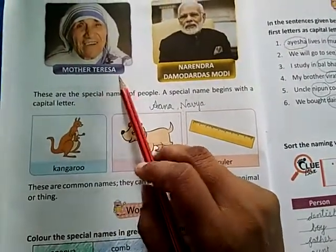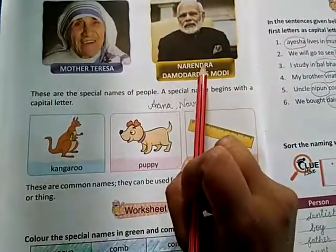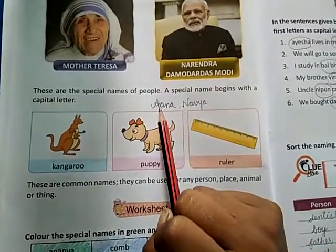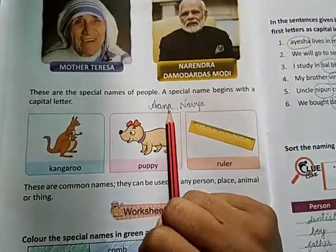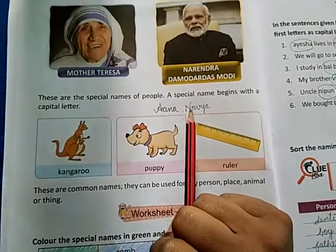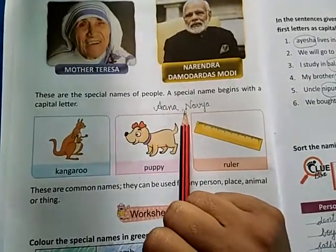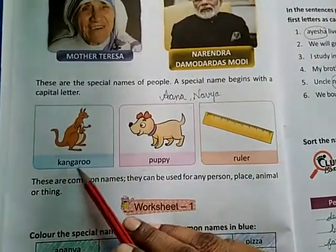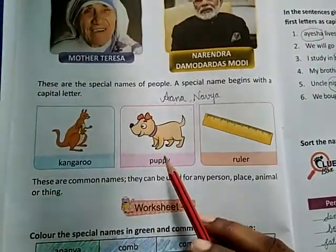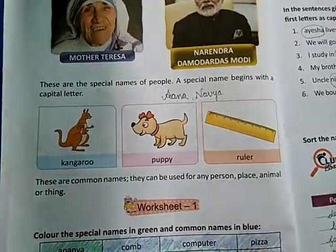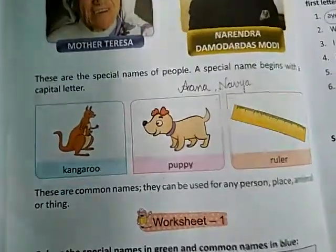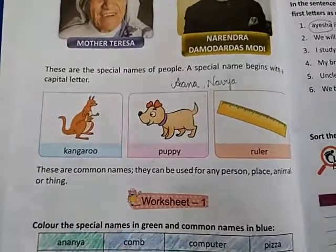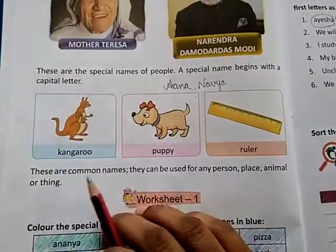Yeh zaroori nahi ki saari capital letter likhi ho, lekin yeh zaroori hai ki pehli letter capital ho — so that we can identify this name is a special name. Ab yahan dekho: Kangaroo, Puppy, Ruler — these are common names. Yeh kya hain? Common names hain.